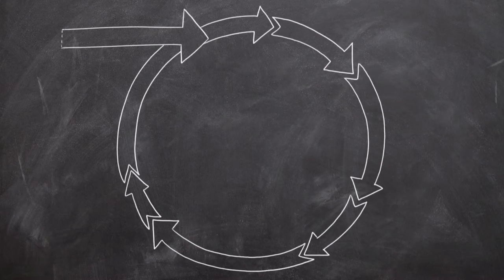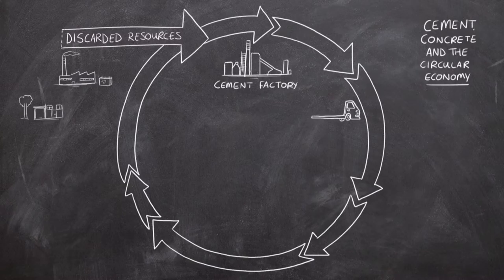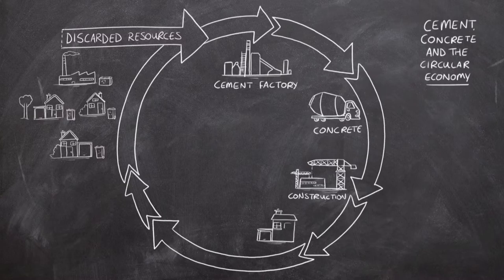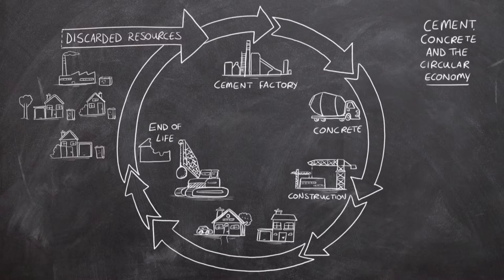Cement, one of the key ingredients in concrete, has been playing a significant role in the circular economy for decades. Millions of tonnes of discarded resources from other industries and from households are recovered and reused in cement kilns each year, both as fuel and raw materials. The advantage of using this waste is that not only are these resources reused, but their use directly reduces the need for fossil fuels and virgin raw materials and also improves the environmental performance of the industry.